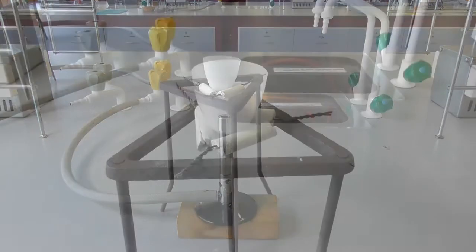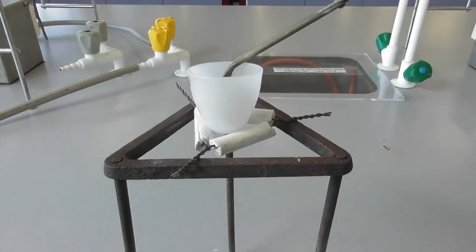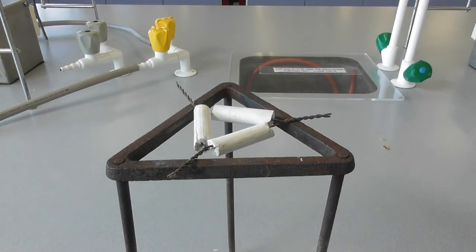To remove the crucible, use a pair of tongs as the crucible will be too hot to touch directly. The rest of the setup will be very hot for some time after the gas has been turned off, so you must take care when handling the equipment.